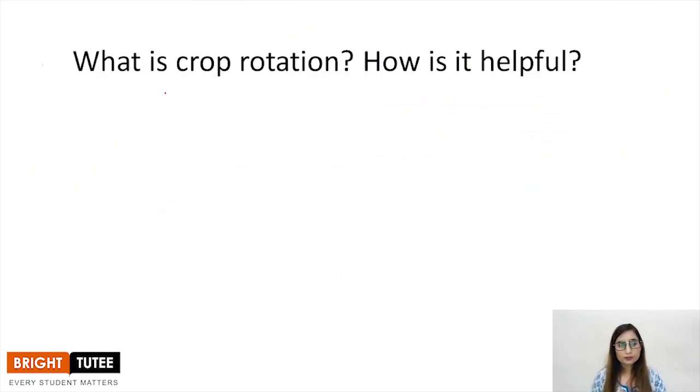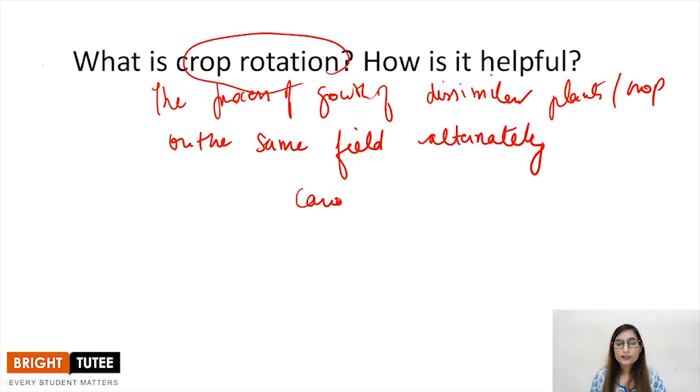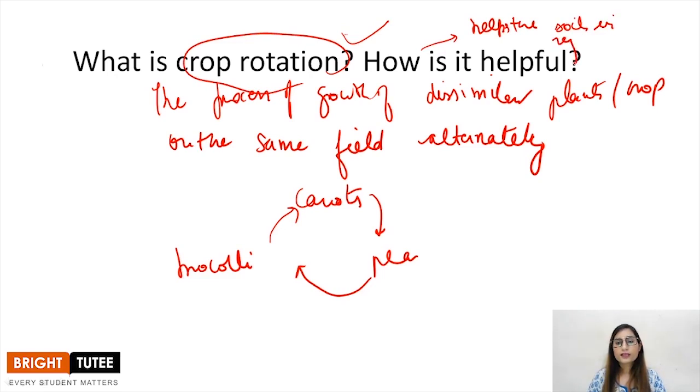What is crop rotation? How is it helpful? The process of growth of dissimilar plants or crops on the same field alternately is known as crop rotation. As I gave you example of carrots, then pea and then broccoli. Firstly, you grow carrots, then peas, then broccoli, then again the repeating cycle. It is helpful because it helps the soil in regaining nutrients because dissimilar plants use different kinds of nutrients for their growth. So it helps the soil to regain the lost nutrients in the time while another crop is grown which is utilizing a different kind of nutrient. So this is crop rotation and this is how it is helpful.